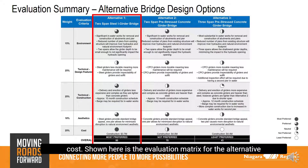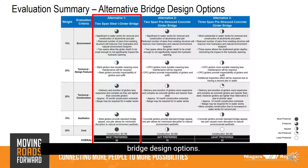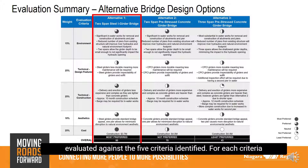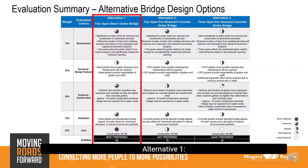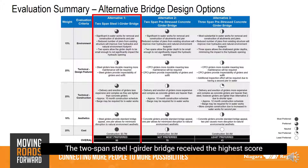The evaluation matrix for the alternative bridge design options is shown here. Each of the three alternative bridge design options was evaluated against the five criteria identified. For each criteria, the alternative was evaluated on a scale from one to five, with one being the least preferred and five being the most preferred. Alternative 1, the two-span steel I-girder bridge, received the highest score of 80 and was identified as the most preferred design option.